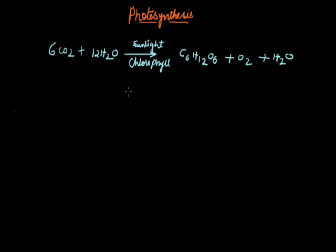Excess glucose is stored as starch to function as an internal energy reserve, to be used as and when required. It is similar to the storage of glycogen as an energy reserve in our body. Most of the photosynthesis occurs in leaves which are green in color due to chlorophyll. A small amount also takes place in young green stems.